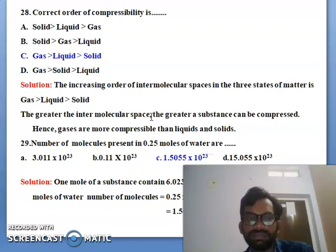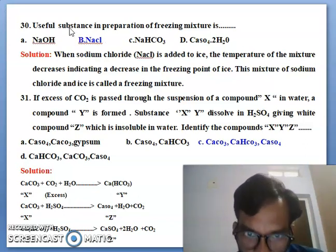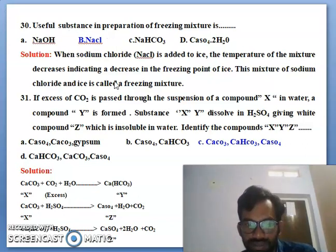Next 30th, the useful substance in preparation for freezing mixture. So freezing mixture they will add sodium chloride. I also wrote here the mention in the solution: sodium chloride is added to the temperature mixture decreasing, indicating the decreasing the freezing point.